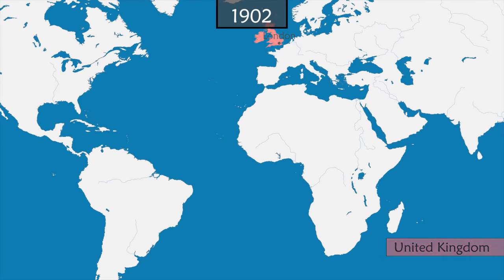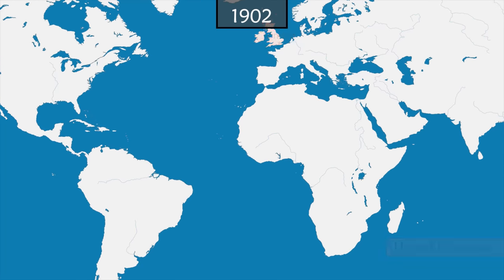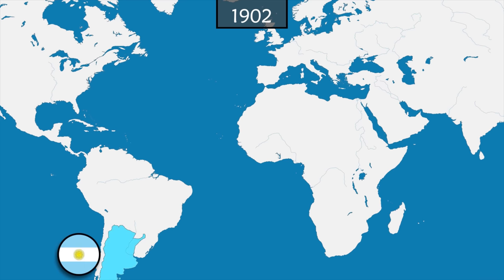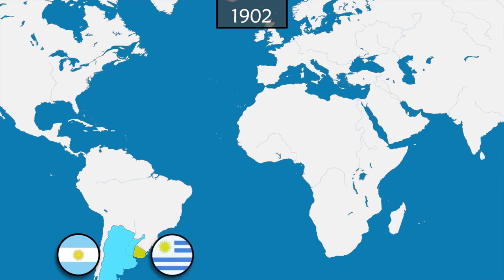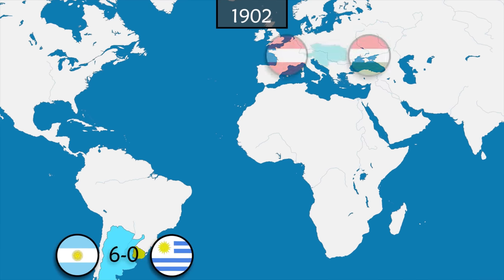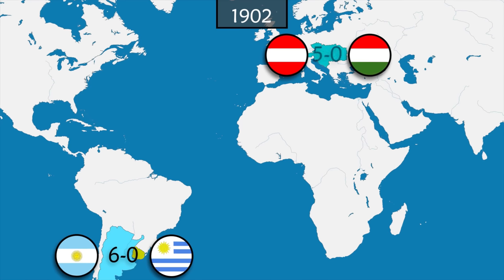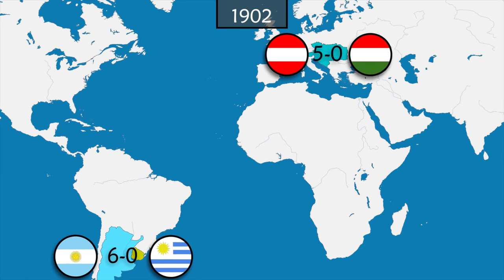Around the world the sport becomes increasingly popular and many new clubs and federations are created. In 1902, the first international matches outside the United Kingdom are held: Argentina beats Uruguay 6–0 in one match, and in the other the Austrian team wins 5–0 against the Hungarian team.